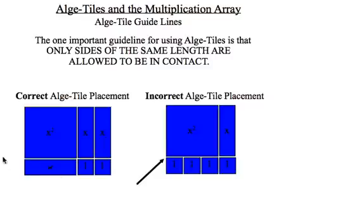So if you look here, x can abut against an x² because they have the same side length. A 1 cannot abut against an x² ever because they do not have the same side length. Even if we stack a bunch of them together this is incorrect, so we can only put the same side lengths against each other.